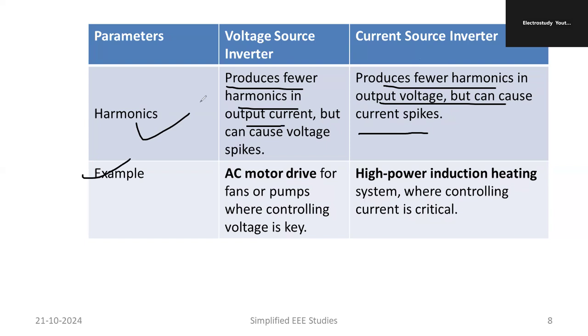Examples of voltage source inverters include AC motor drives — especially fans and pumps — where we can easily control the voltage. Regarding induction heating, current source inverters are most popularly used.